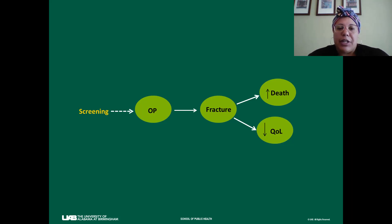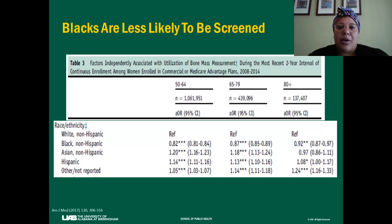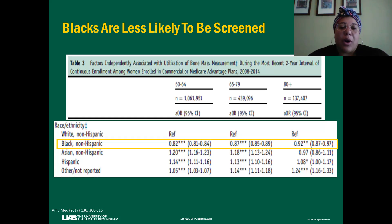All of this begins with screening, and in the prevention scheme, in addition to screening, you also have treatment. It's important to evaluate racial disparities in these pieces to see how we could potentially mitigate some of the end outcomes. When looking at racial disparities in screening, studies have shown that Blacks are less likely to be screened. This large study using commercial data showed that irrespective of age, Blacks had lower odds of being screened, whereas people of other race and ethnic groups had higher odds of being screened than non-Hispanic whites.